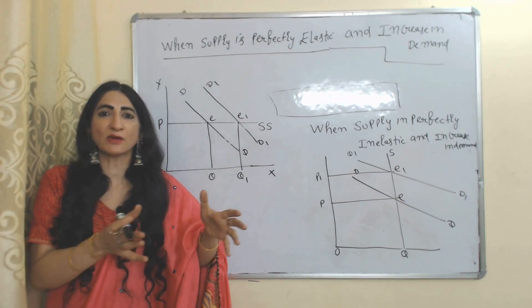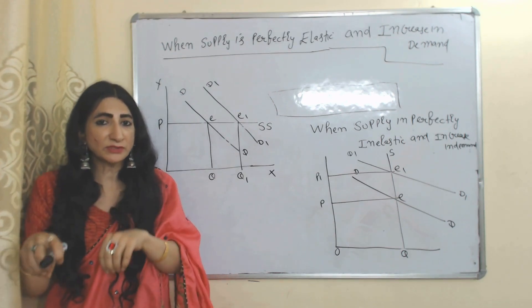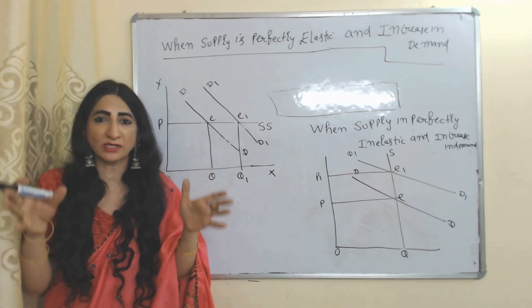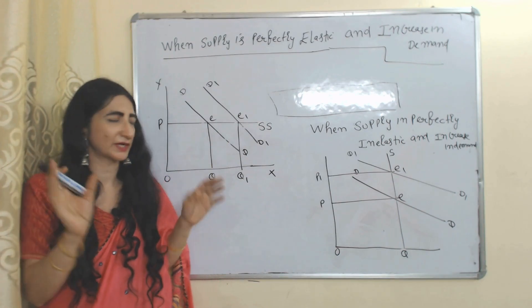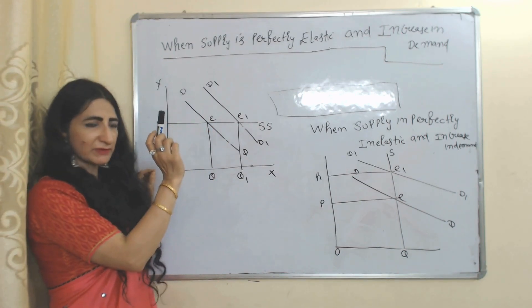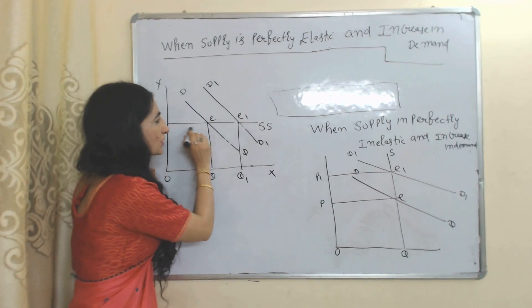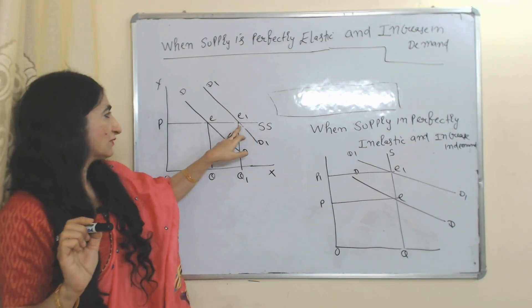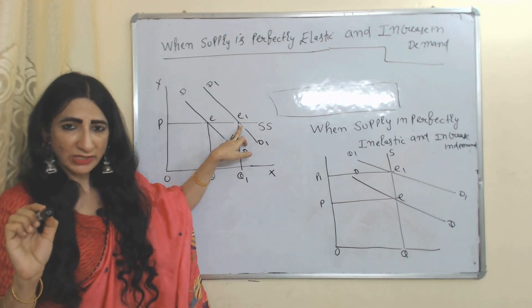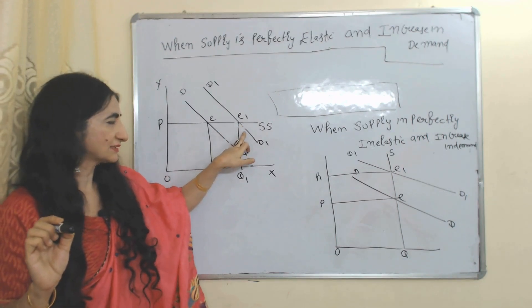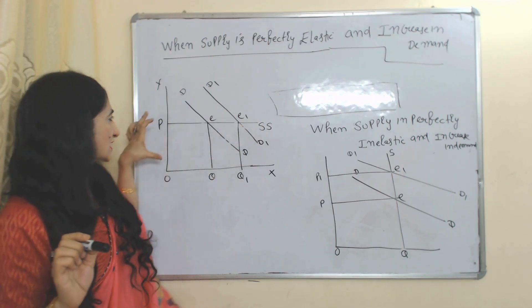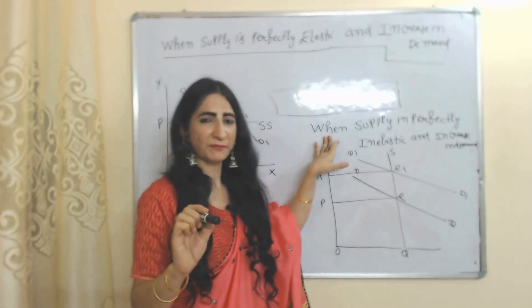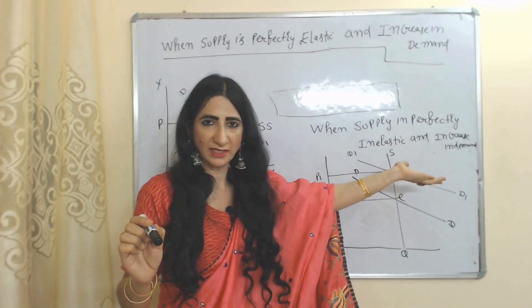Now we'll see some special cases. Increase in demand when supply is perfectly elastic. Perfectly elastic supply means a producer can supply any quantity at a given price. That means a change in demand will not affect price — price will remain constant. E is the initial equilibrium point. This horizontal line shows a perfectly elastic supply curve. E1 is the new equilibrium point. At this new equilibrium point, you can see our demand has increased but still our price remains constant.